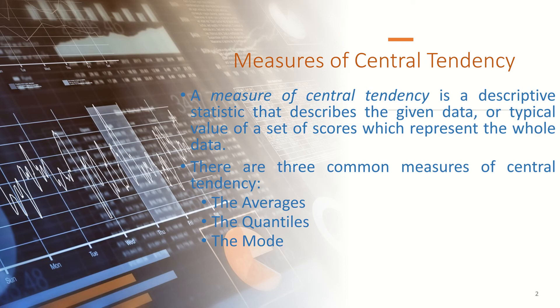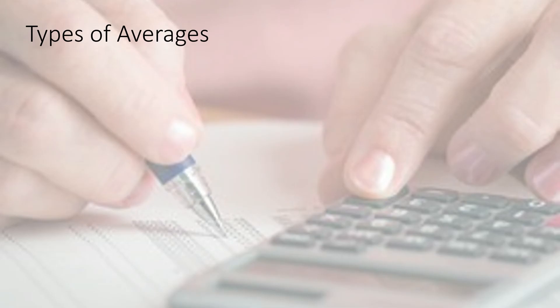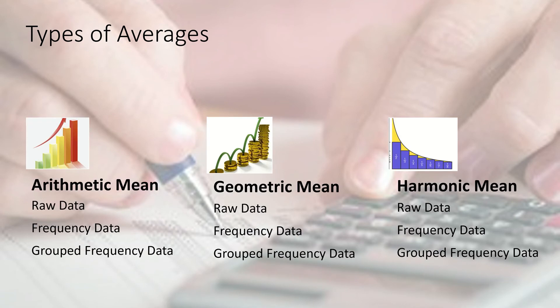In this lecture we'll be talking mainly about the averages. Later on, I'll be talking about the quantiles and the mode as well. An average is a descriptive quantity used for description of data — finding a central value which describes the given data. The main types of averages are arithmetic mean, geometric mean, and harmonic mean.